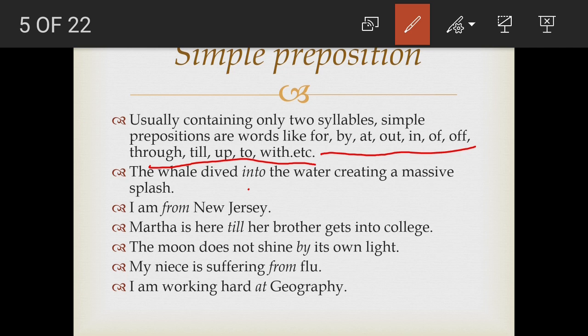Now let us see examples of how to use these simple prepositions. The preposition here is 'into.' I am from New Jersey — 'from.' Martha is here till her brother gets into college — 'till.' The moon does not shine by its own — 'by.' My niece is suffering from flu — 'from.' I am working hard at geography — 'at.' So these are all simple prepositions.